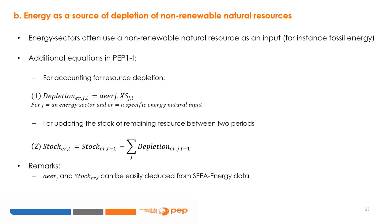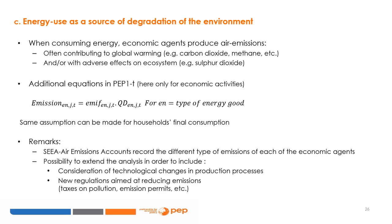In most cases, specific industries that produce energy goods use a non-renewable resource as an input, like fossil energy. In PEP1T, it can be relevant to account for this adverse pressure on the physical environment and consider the use of energy as a source of depletion of natural resources. For instance, Equation 1 links the level of physical depletion of the natural resource for a given period T directly to each energy sector output, and Equation 2 considers the evolution of stock between two periods of the remaining resource. Technical parameters and stocks of natural resources can be easily deduced from the SEEA energy data, which provides information on energy resource availabilities and quantities of resource extractions.